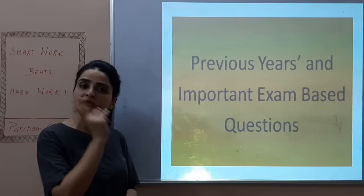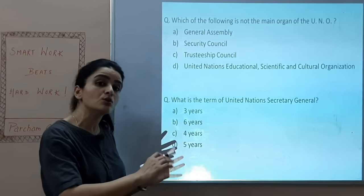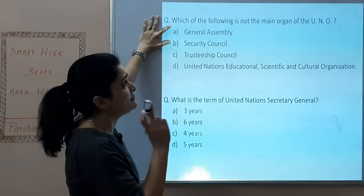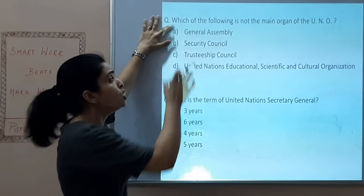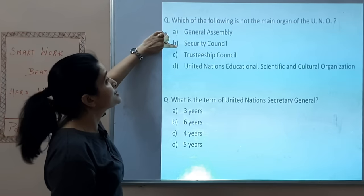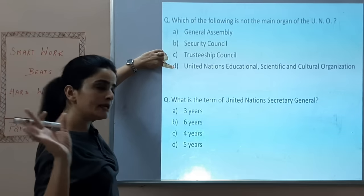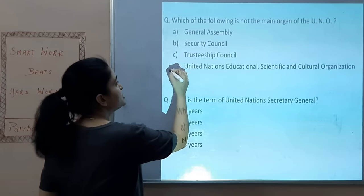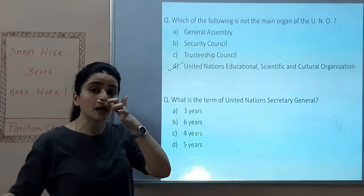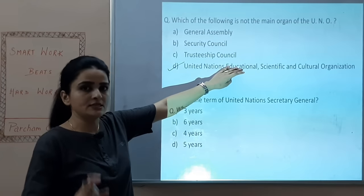Now let's quickly go through questions. Which of the following is NOT a main organ of the UNO? Options: General Assembly, Security Council, Trusteeship Council, or UNESCO (United Nations Educational Scientific and Cultural Organization). The answer is D — UNESCO. It is associated with the UN but is not a main organ. We will study it later when we cover UN-related organizations.